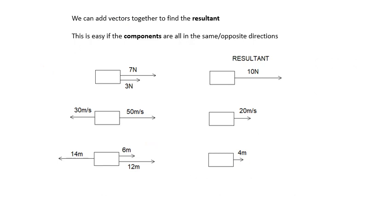We can add vectors together to find the resultant. The resultant is what you get when you add vectors together. You start with the components, the things that you add together. If these components are all in the same direction or in opposite directions, this is dead easy. 7 plus 3, the resultant is 10. 50 minus 30, the resultant is 20 meters per second. I could have said instead of 30 meters per second, I could have called it minus 30. But the direction, look at the arrow, that tells you that it's in the opposite direction. And then 6 plus 12 minus 14 is 4 meters. You add the components together to get the resultant. If everything is in the same direction, piece of cake.